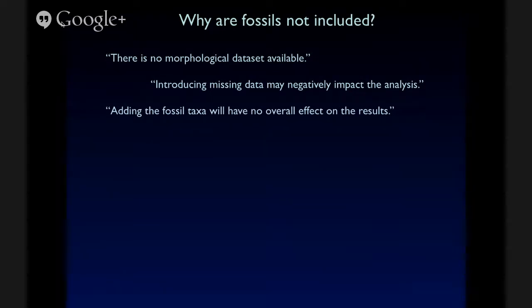But by far my least favorite answer is adding the fossil taxable will have no overall effect on the results. And this is something that can't be said to be true a priori. You have to do the analysis first. And many recent studies have shown that fossils can affect the placement of even the extant taxa relative to one another, not to say, of course, that including them is going to make the phylogeny more complete because we're adding them into the tree, even if the relationships of extant taxa don't change.